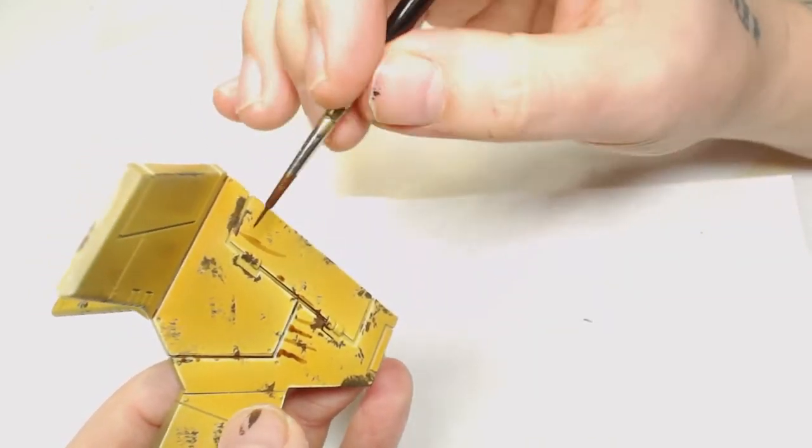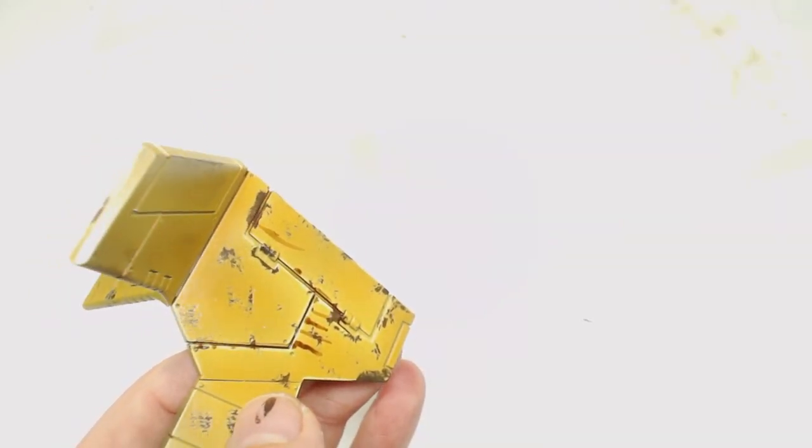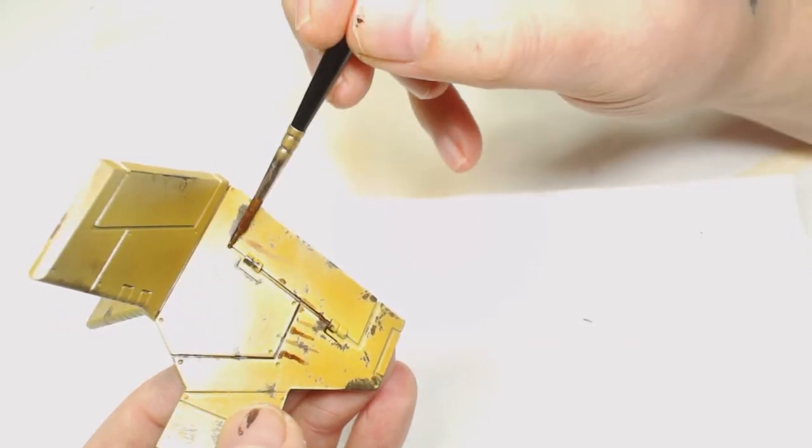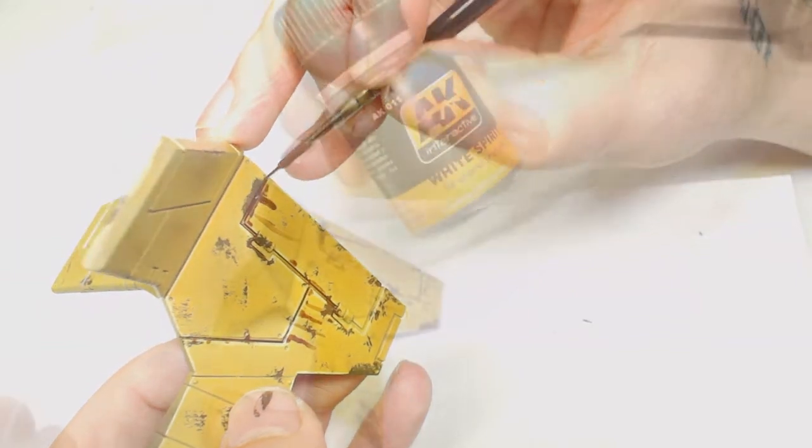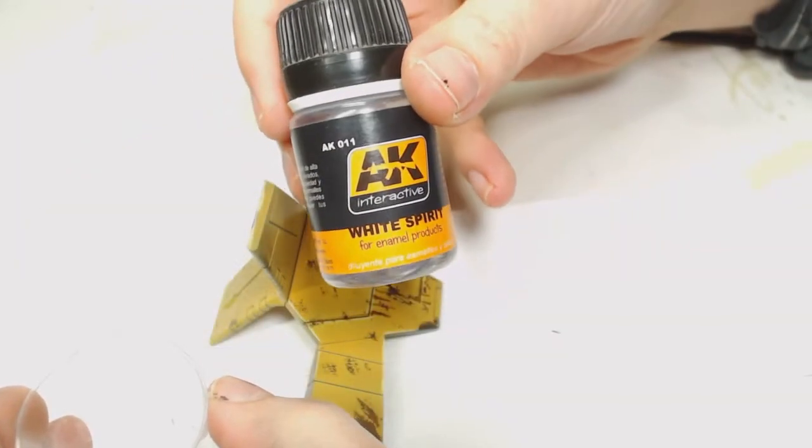Because we're going to remove it with slight traces of turps, it's going to blend all those lines together. You're not going to get sharp lines where you don't want them, you're going to have a nice transition of color. Now I'm being quite generous with it at the moment. For this video we're going to be using AK Interactive White Spirit.